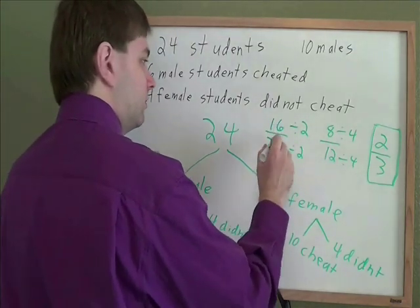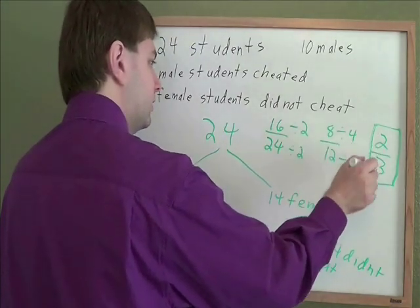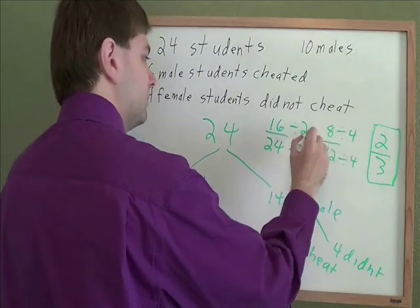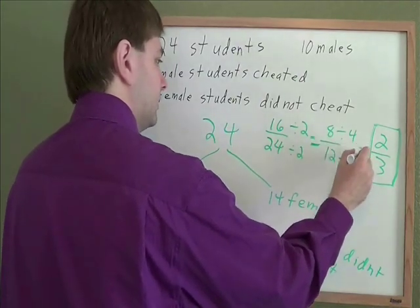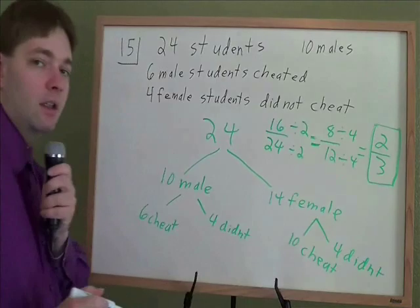Now if you can see it, 16 and 24 both divide by 8, that's a quick way of getting to 2 thirds. You can take as many steps as you want reducing this as long as you get to 2 thirds at the end. And that is your answer.